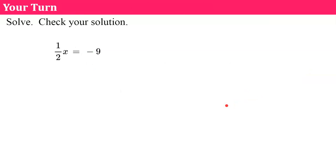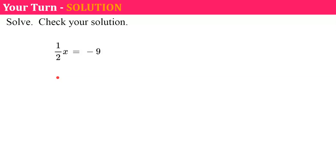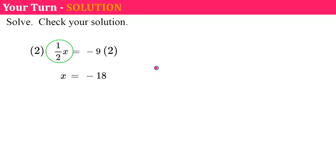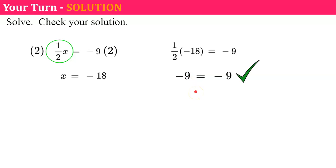Your turn — pause, solve, check, and come back. Welcome back. I hope you multiplied both sides by the reciprocal. The reciprocal of 1/2 is 2. 2 times 1/2 is 1. Negative 9 times 2 is negative 18. Let's check: replacing x with negative 18, 1/2 of negative 18 is negative 9. It checks.